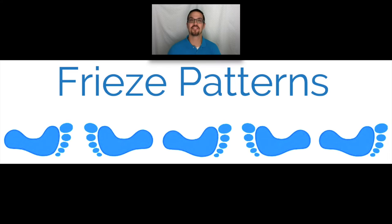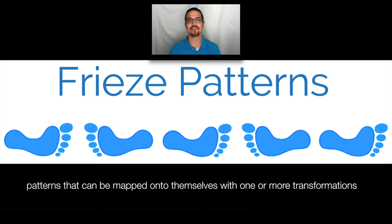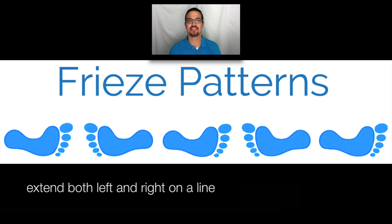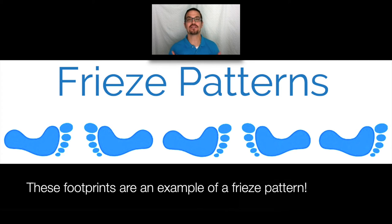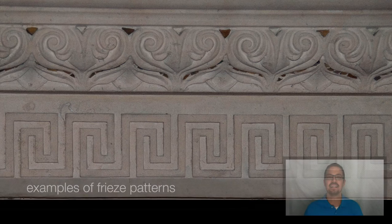This is going to be a video on freeze patterns. Freeze patterns are basically patterns that can be mapped onto themselves with one or more transformations. They extend both left and right on a line, so basically they're the same thing as tessellations, only they extend linearly.